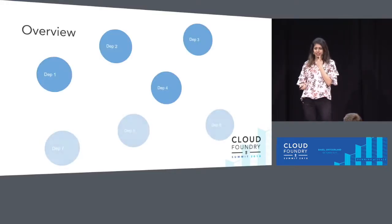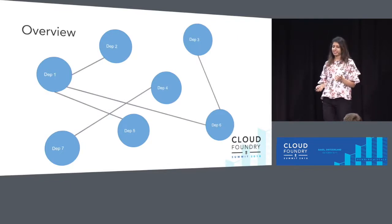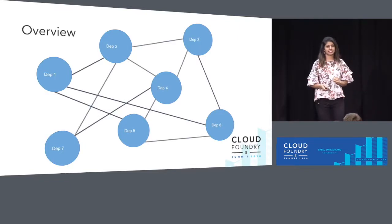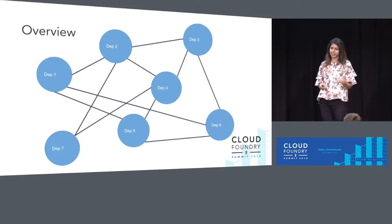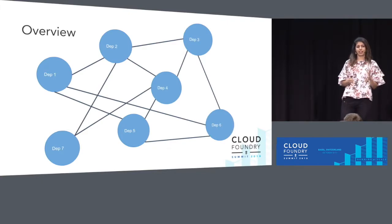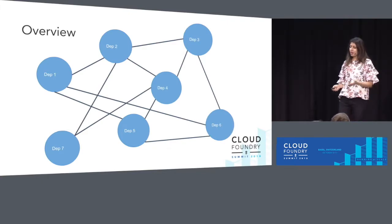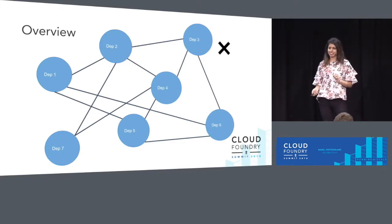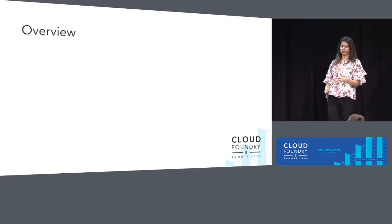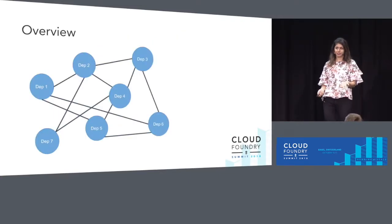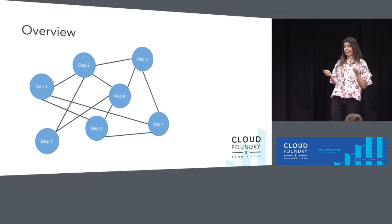We want to talk to you today about an interesting problem that exists in the Bosch universe. Imagine you have multiple massive deployments — properties, variables, and links being shared all over the place. Properties being shared through links, variables being generated left and right, certificates being presented and flying everywhere. And in the midst of all of this, an error occurs. And you are the one person responsible for fixing this problem. The question is: how are you going to do this?